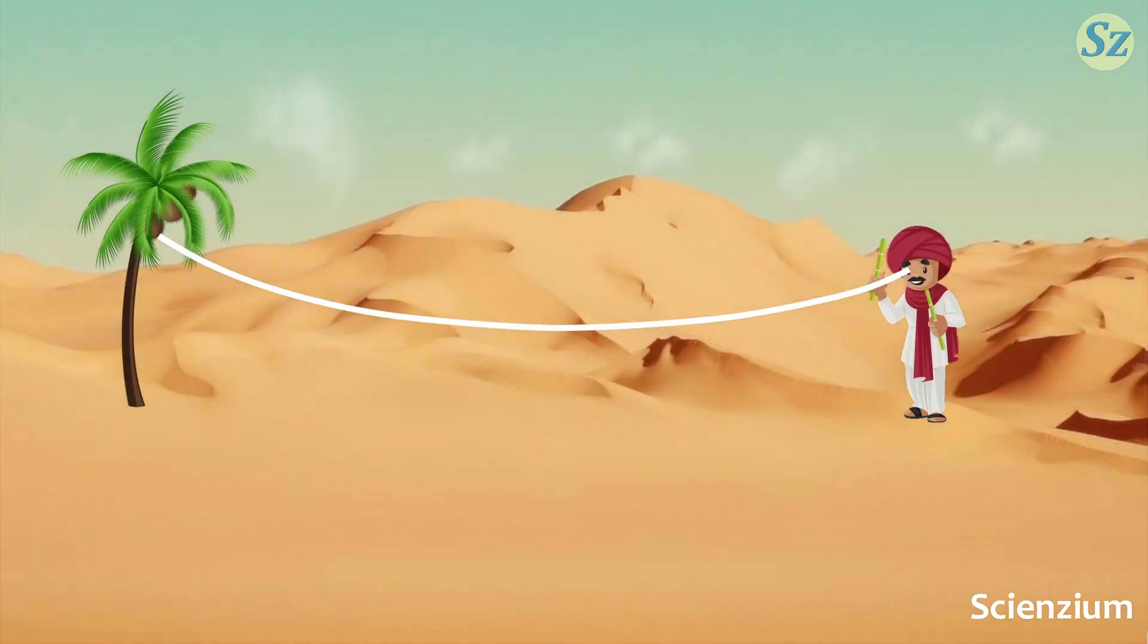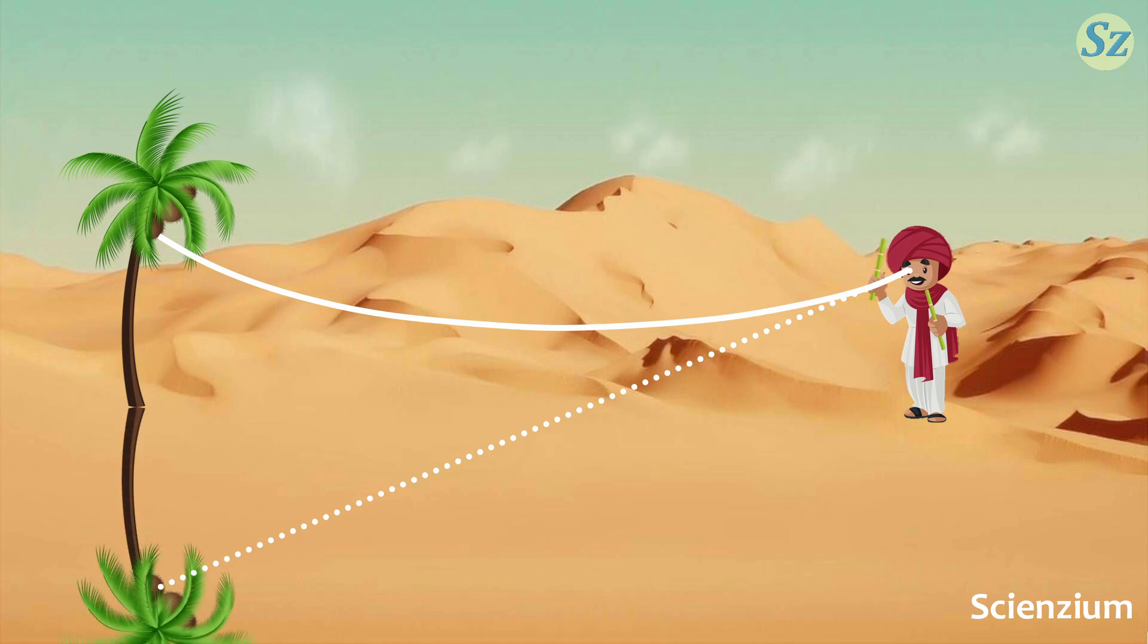However, our brain does not perceive that the light has been bent several times. Instead, it assumes that the light traveled in a straight line. As a result, an inverted image of the object appears underneath.